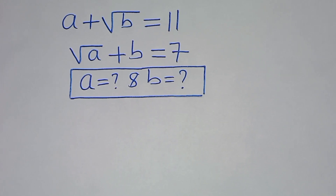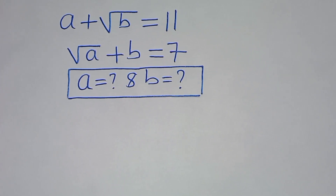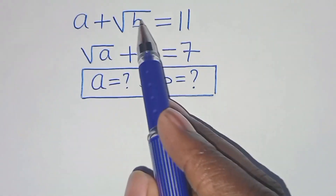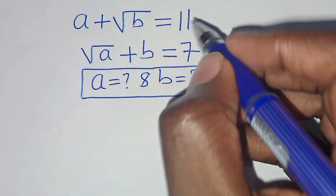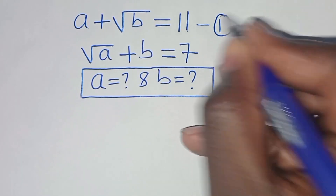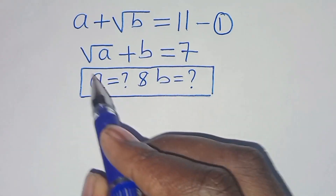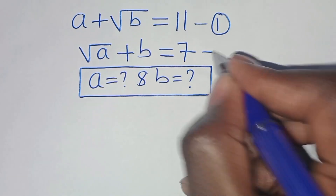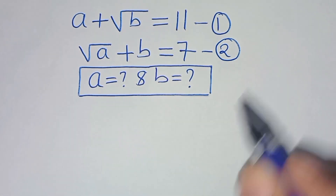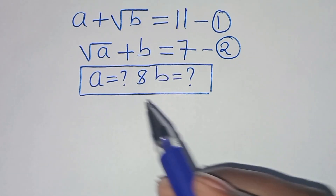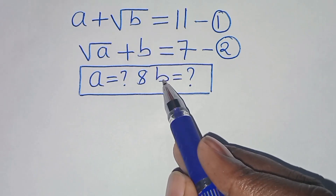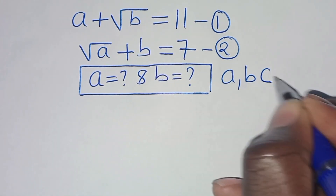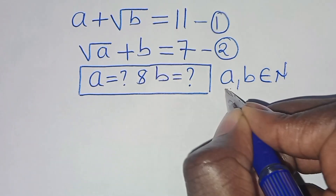Hello everyone, you are welcome to solve this nice algebra problem. We have a plus square root of b equals 11 — let's call this equation 1. And square root of a plus b equals 7 — let's call this equation 2. What is the value of a and what is the value of b, given that a and b are members of the natural numbers?